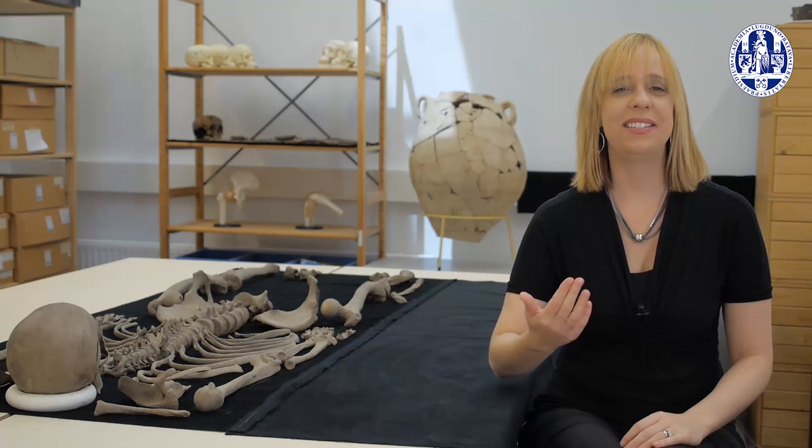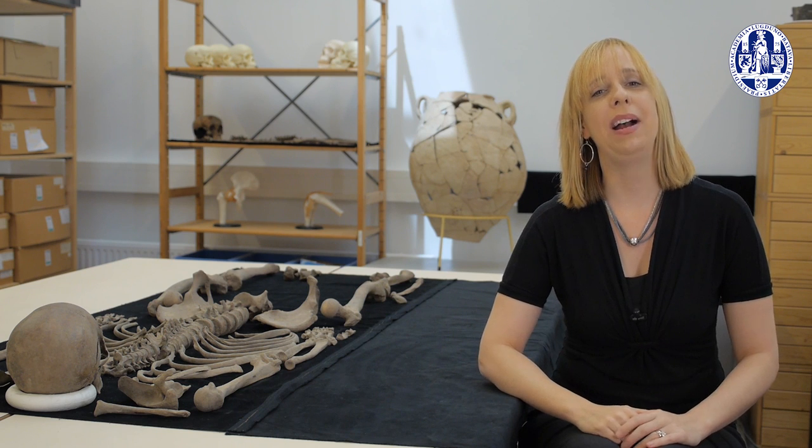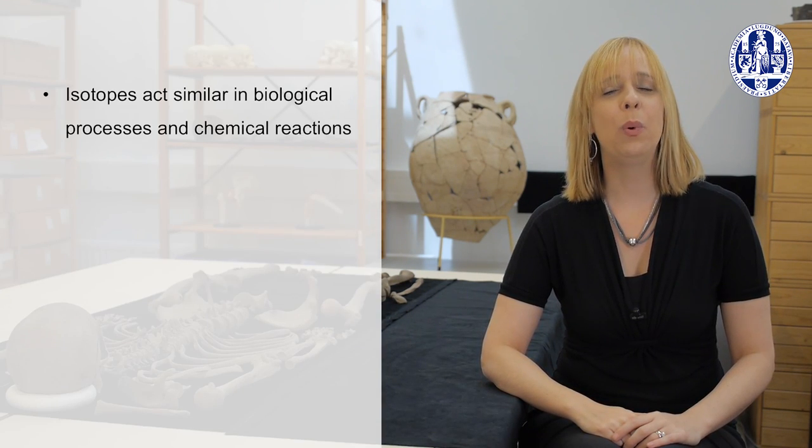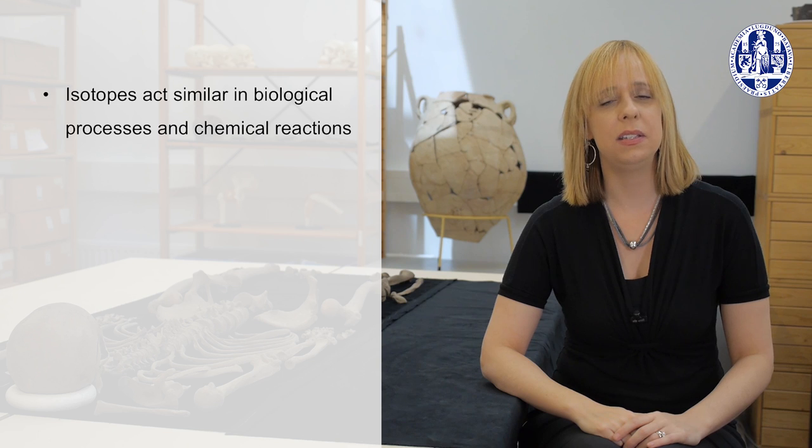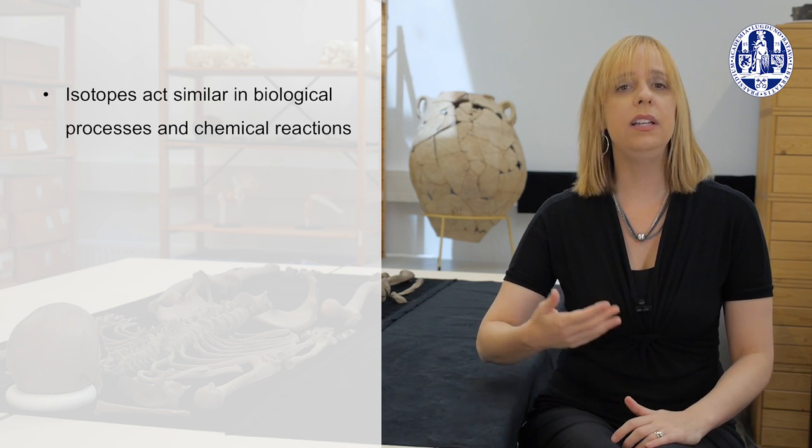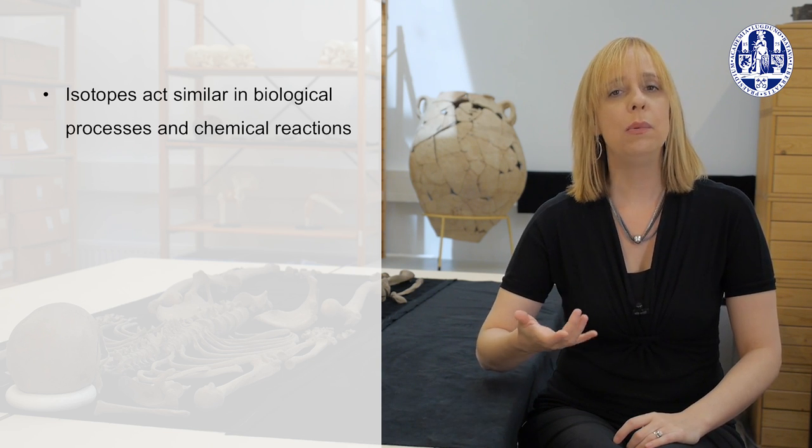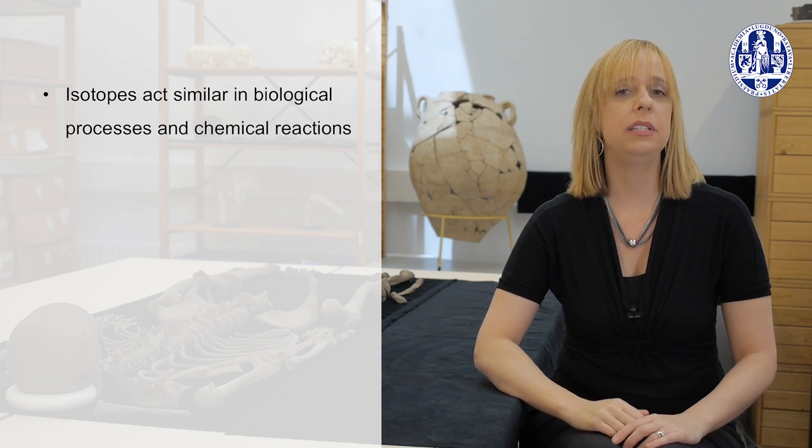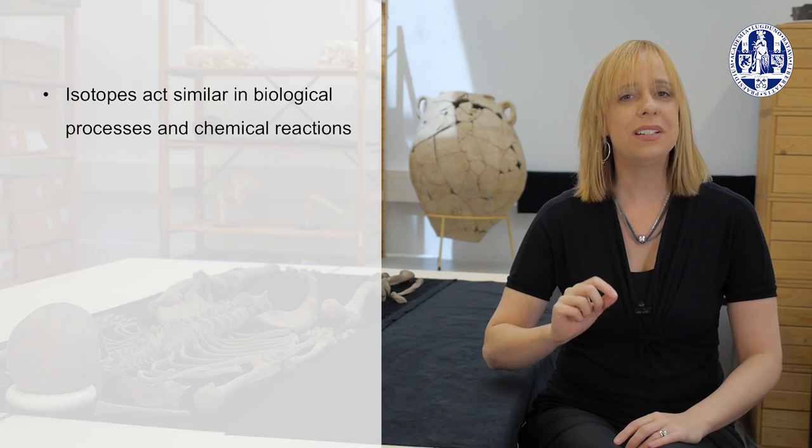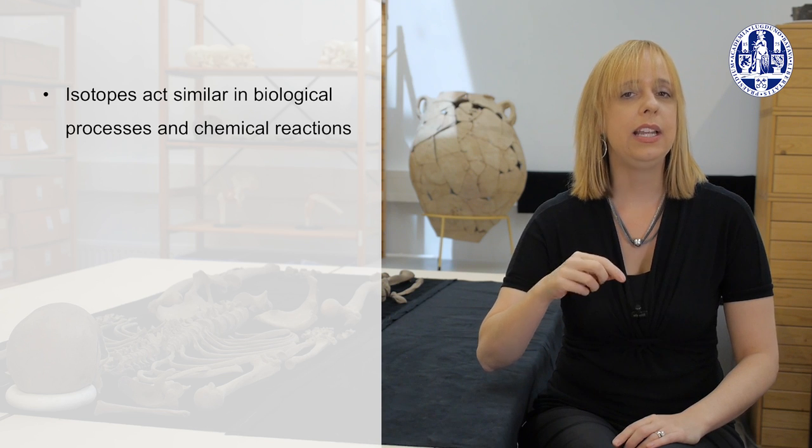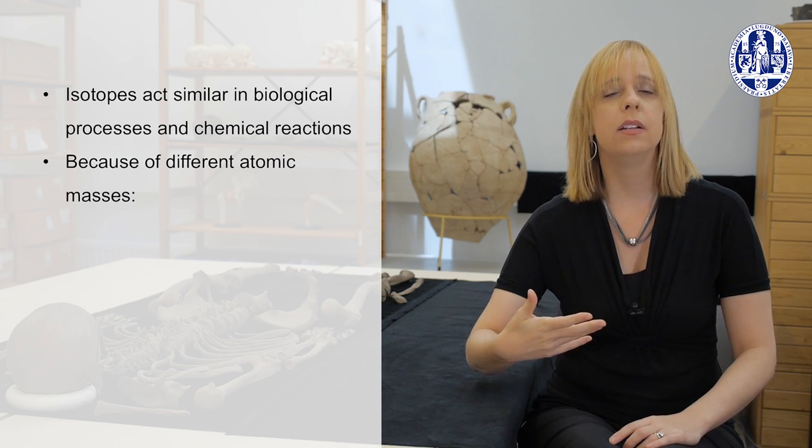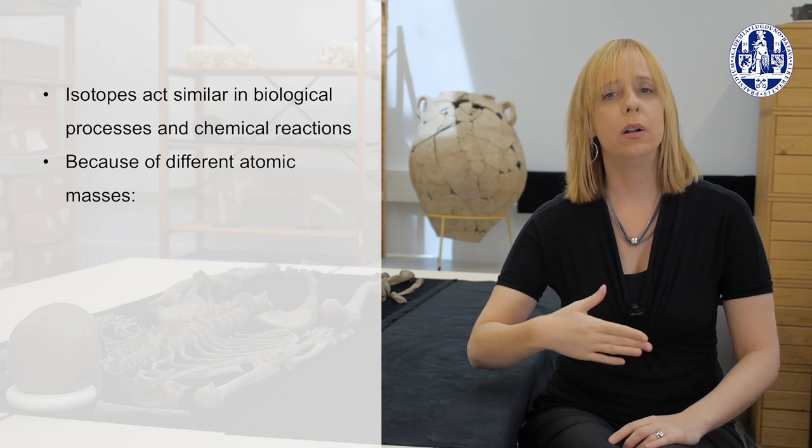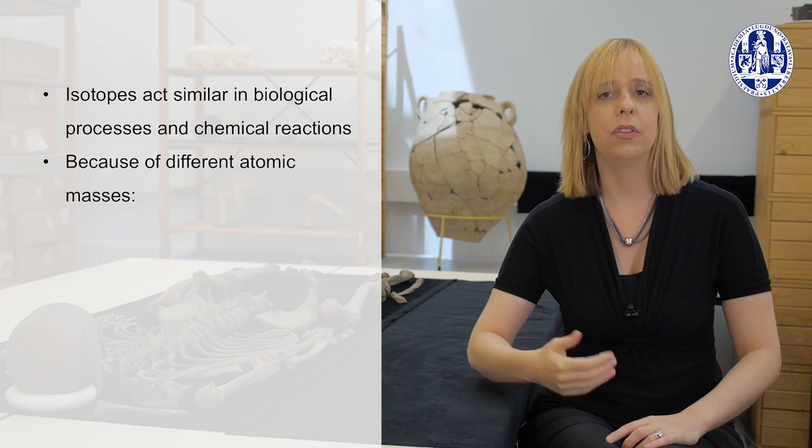So how does the existence of these stable isotopes translate into something we can use to reconstruct what past people were eating? First, what's important to keep in mind about these isotopes is that chemically they are the same. So carbon-12 and carbon-13 work the same way in biological processes and chemical reactions. But physically, they differ ever so slightly in their mass or their weight. So in the case of carbon, carbon-13 is slightly heavier than carbon-12.